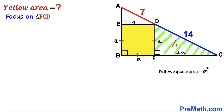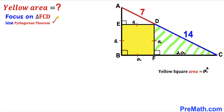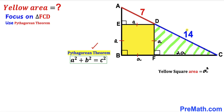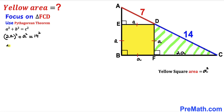Now let's focus on right triangle FCD, whose side lengths are a, 2a, and 14. We apply the Pythagorean theorem: a squared plus b squared equals c squared. The hypotenuse is 14, so we get (2a) squared plus a squared equals 14 squared, which simplifies to 4a squared plus a squared equals 196.